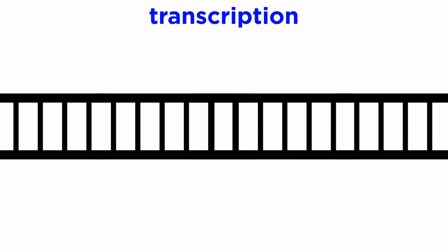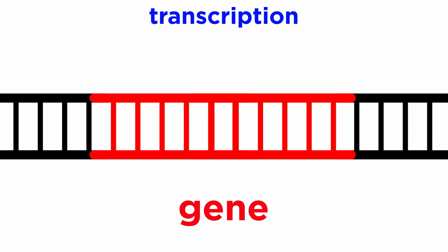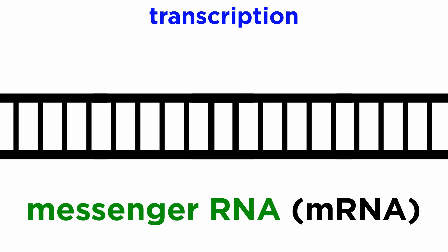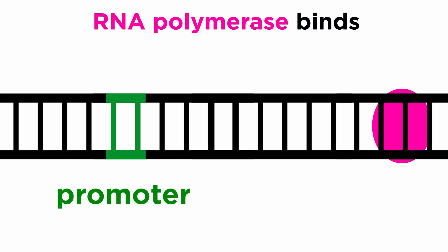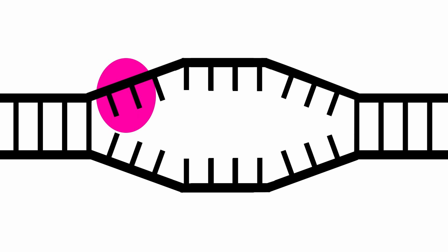The first step is called transcription. This is the process by which enzymes use one of the strands of DNA within a gene as a template to produce a messenger RNA or mRNA. To do this, RNA polymerase, with the help of proteins called transcription factors, binds to a specific sequence within the gene, which is called the promoter, and pries the two strands apart.